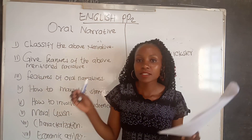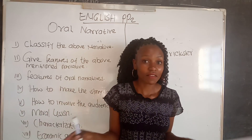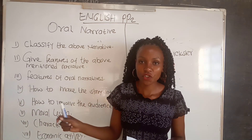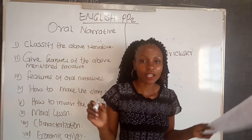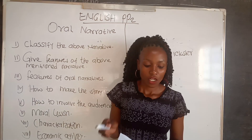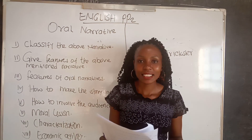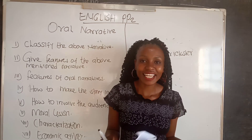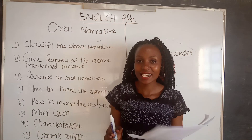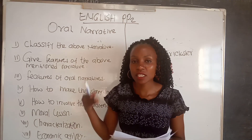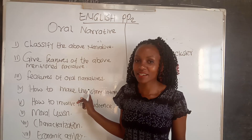We have dialogue or direct address, whereby two characters are having a conversation in the story — in most cases indicated by opening and closing quotation marks. We also have fantasy, which is the imagining of things unlikely to happen. Those are the common features of oral narratives, so you have to look in the narrative you are reading for one, two, or three of these features, and then write them down.